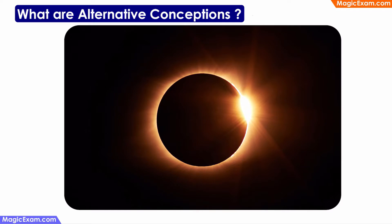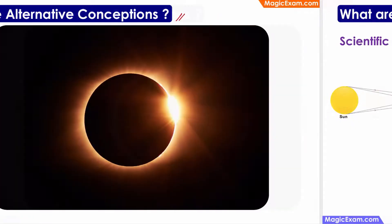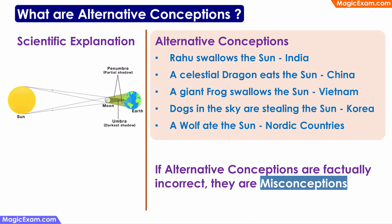So what are these alternative conceptions? You can see one image on the screen — this is a solar eclipse. The scientific explanation is that when the moon comes between the earth and the sun, the shadow of the moon falls on the earth, visible to us as a solar eclipse. However, if you look at how this has been explained historically in different countries: in India, we say a demon called Rahu swallowed the sun; in China, they say a celestial dragon eats the sun; in Vietnam, a giant frog swallows the sun.